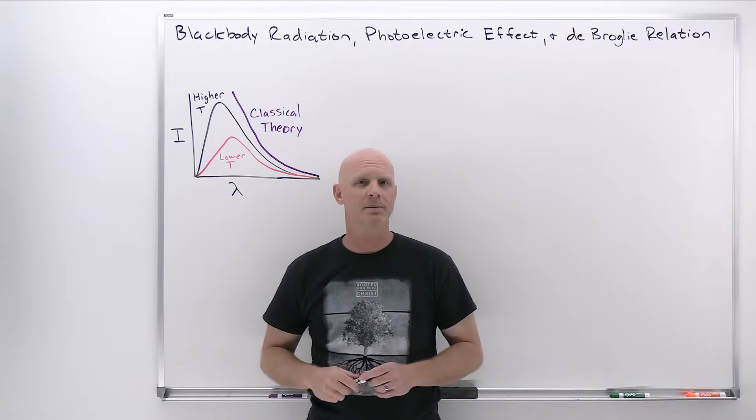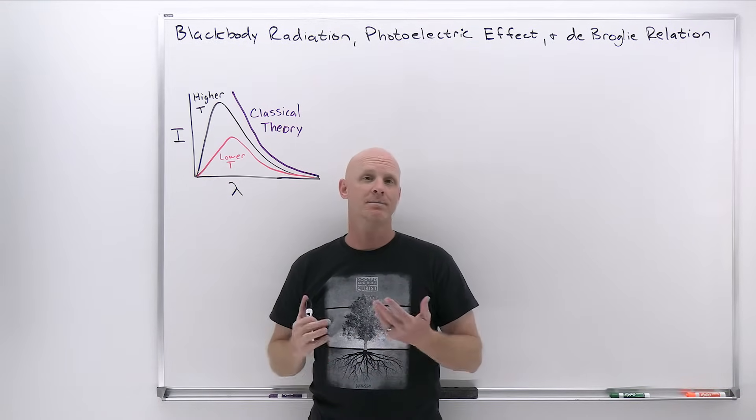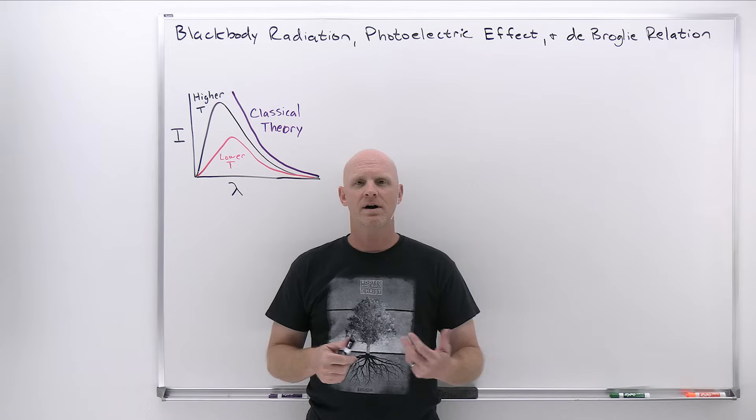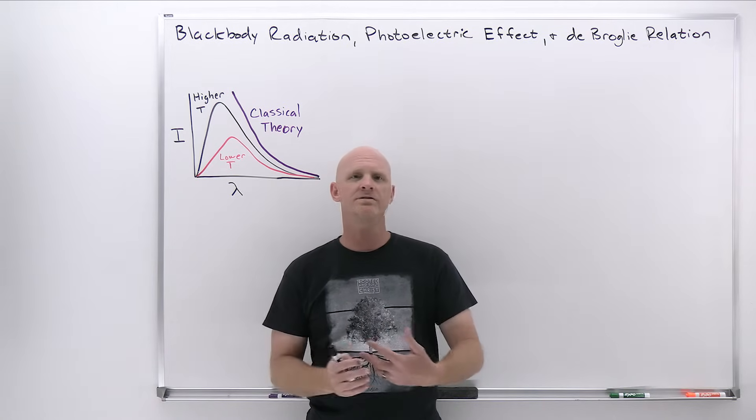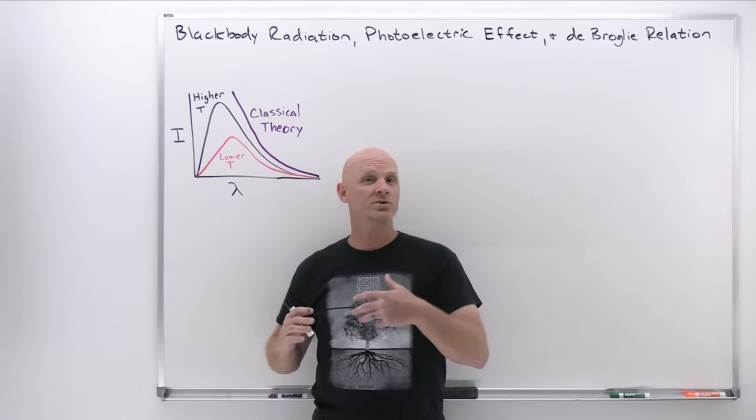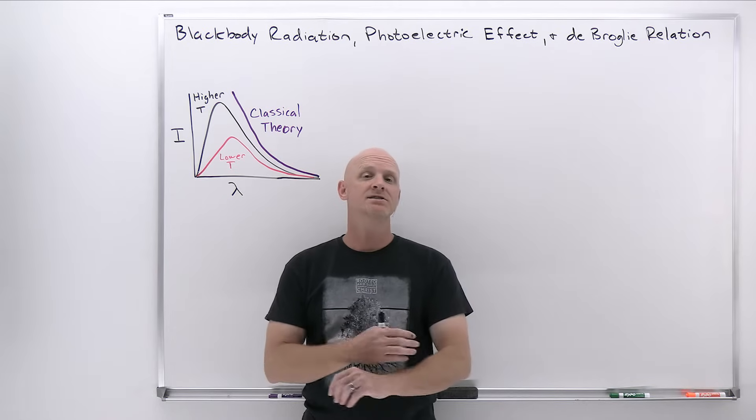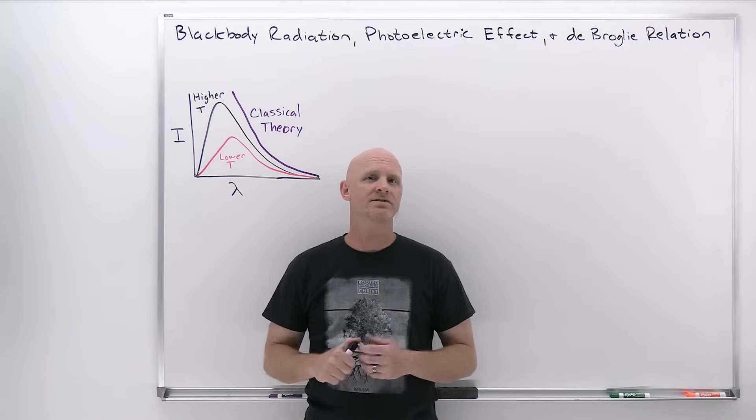We're going to start by taking a look at the shortcomings of classical theory to explain black body radiation. A black body is simply one that absorbs all incident radiation, and the characteristic radiation it emits is purely a function of its temperature.